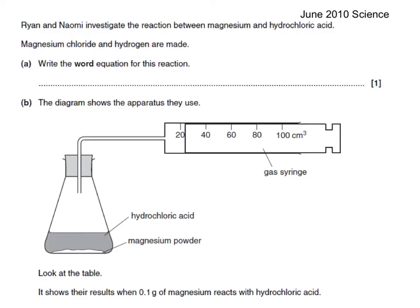Here's a past paper question. Ryan and Naomi investigate the reaction between magnesium and hydrochloric acid. Magnesium chloride and hydrogen are made. Write the word equation for this reaction. Well, this is a doddle because we're told that magnesium and hydrochloric acid are the reactants. If you write big like I'm going to, then it might be better to write acid underneath rather than go on to the next line.